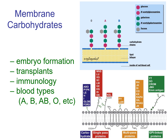Blood types — ABO, etc. — are the result of carbohydrates found on the cell membrane of red blood cells. Whether you have O, A, or B blood type, you have a common sequence of carbohydrates attached to a particular glycolipid. If you have type A blood, you also have an additional carbohydrate stuck onto that core sequence; type B has a different one; AB blood has both types of glycolipids. There are many other blood types as well — lots of different glycoproteins and glycolipids determine blood typing.